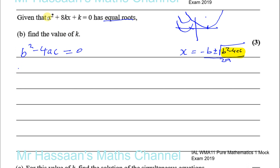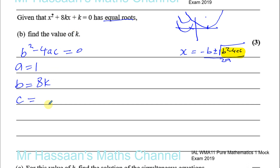So we're looking at the case where b squared minus 4ac equals 0. Taking our equation x squared plus 8kx plus k equals 0: a equals 1, b equals 8k, and c equals k. So b squared is 8k all squared, minus 4 times a, which is 1, times c, which is k. We know that equals 0, and now we solve this to find the value of k.